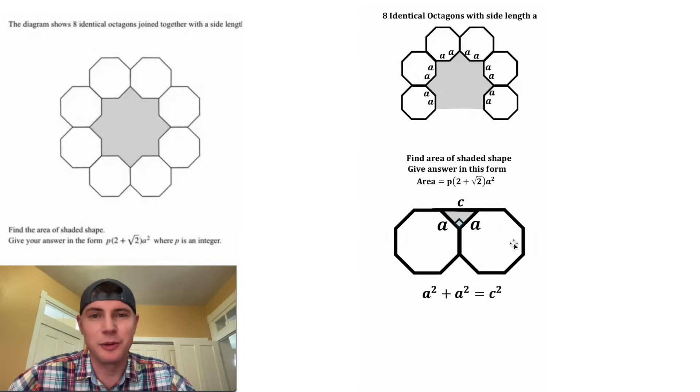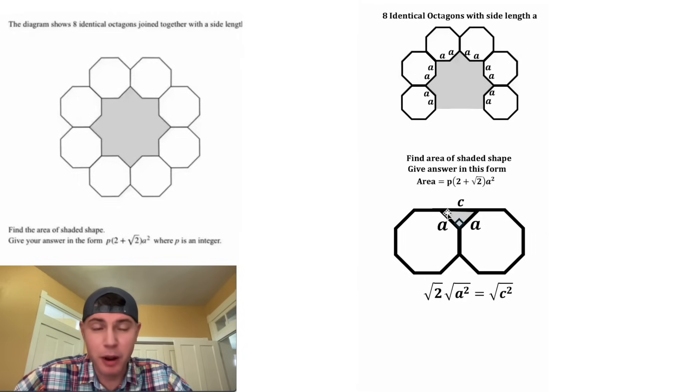A squared plus A squared is equal to C squared. A squared plus A squared is equal to 2A squared. And then we can square root both sides of the equation. We can break this out into square root of 2 times square root of A squared. Since these are positive distances, the square root of A squared is A, and the square root of C squared is C.